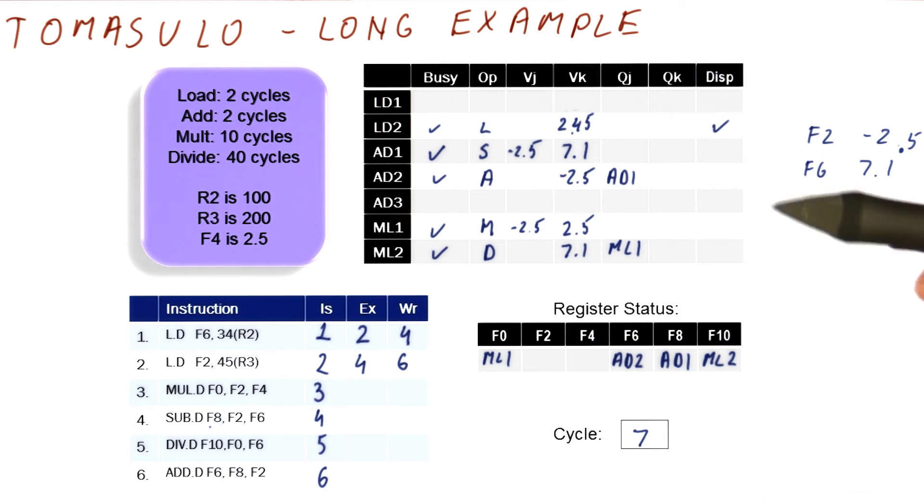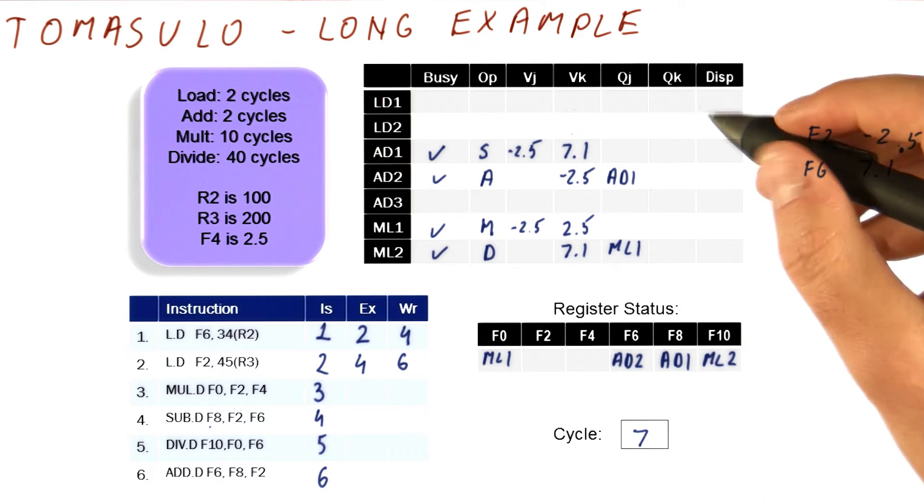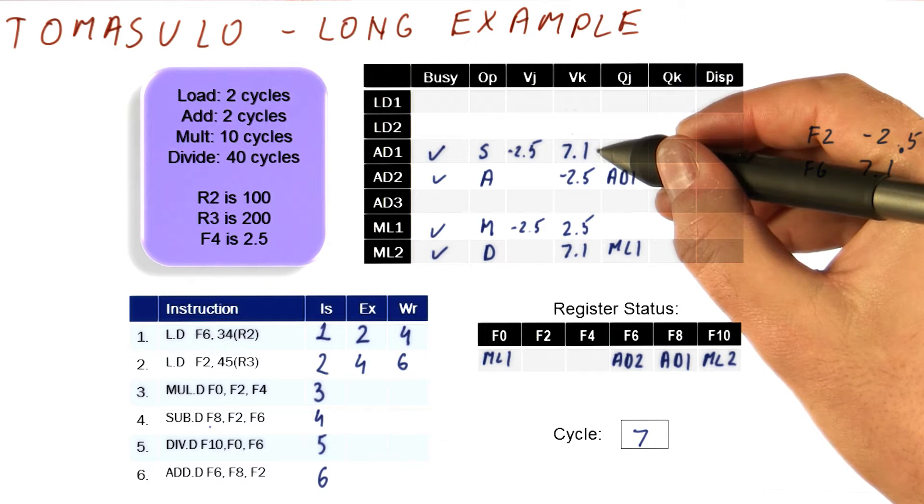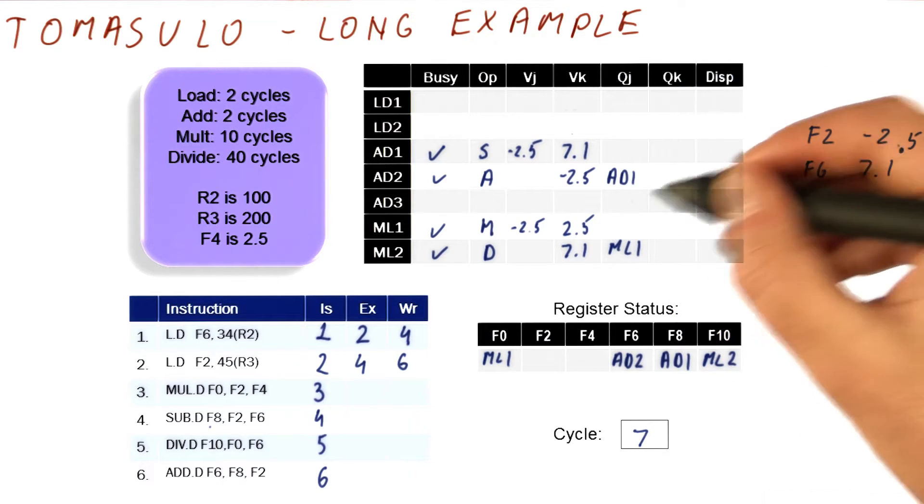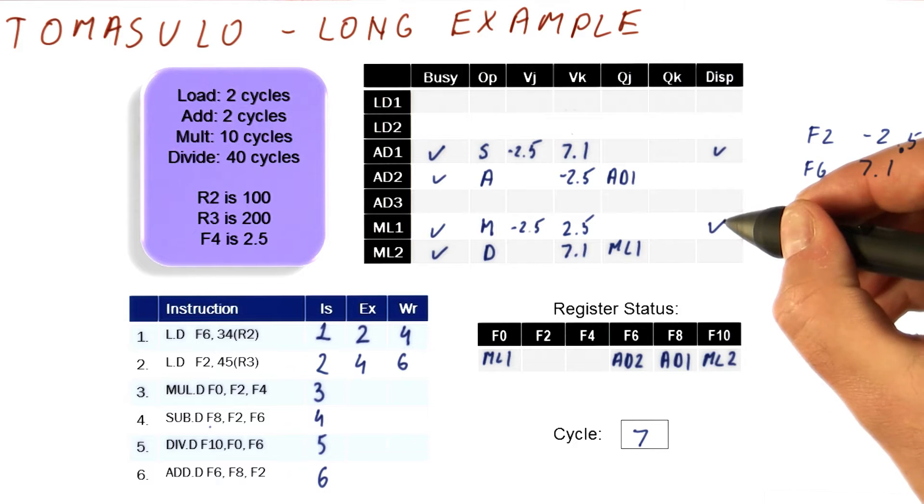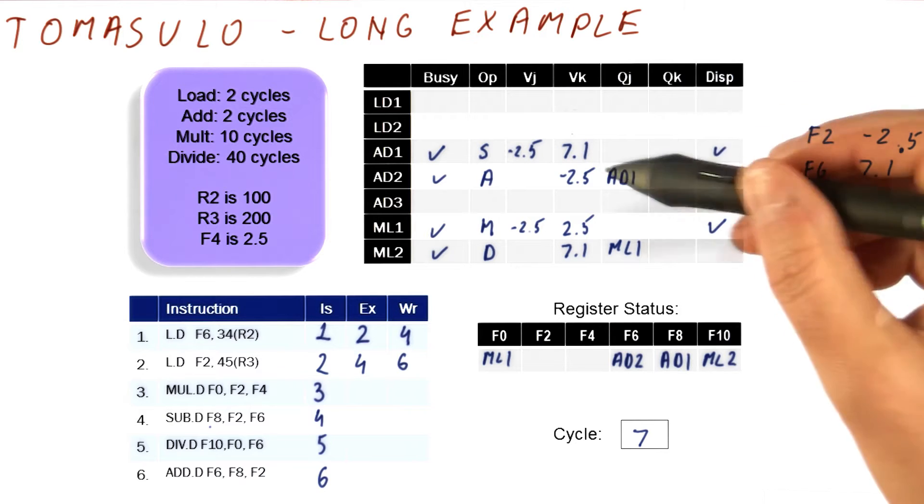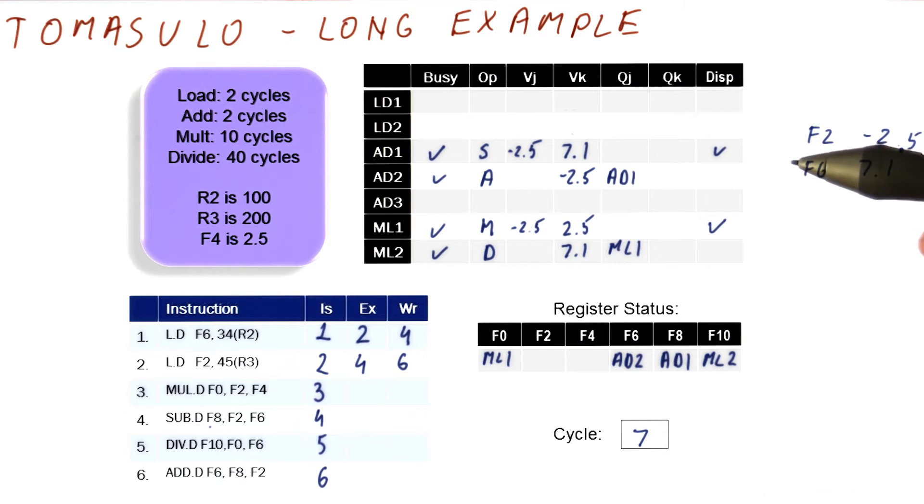Let's see what we can dispatch. Well, we have an instruction here that is ready, and we have an instruction here. They are going to different units, so they can actually both dispatch in the same cycle. So now, both of these instructions have been dispatched.